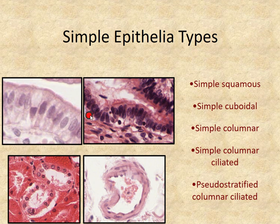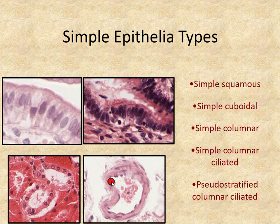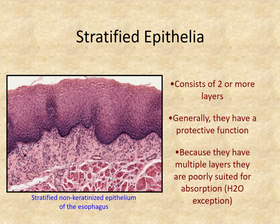For the simple types: we have simple columnar, simple columnar ciliated, simple cuboidal, and simple squamous. Every blood vessel on the inside has a layer of simple squamous epithelium — this has a special name called endothelium. And then we have stratified epithelium, which has two or more layers — generally for more protection.